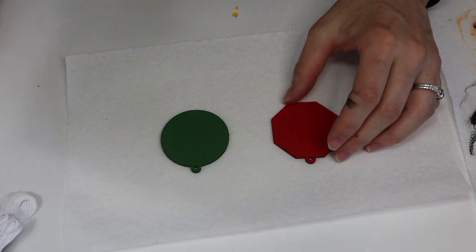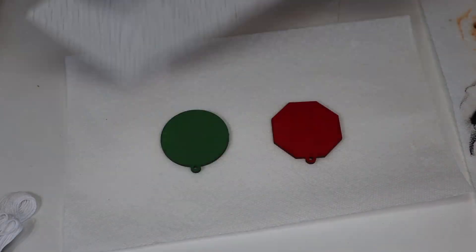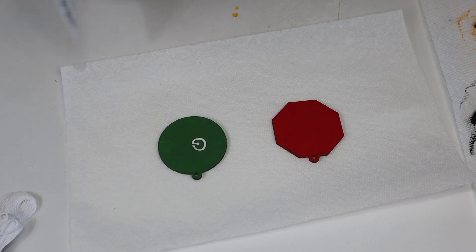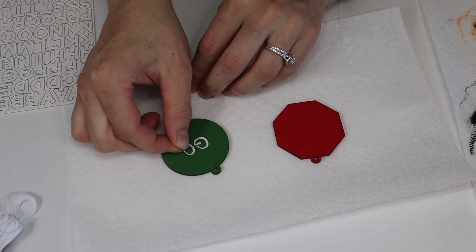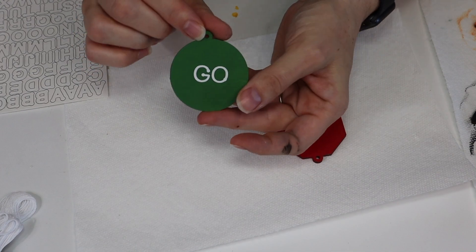I'm going to go ahead and work on the stop sign and the go sign. I'm taking these white stickers also from Hobby Lobby and just putting it on both sides. So we've got go on both sides of the green one and then stop on the stop sign.